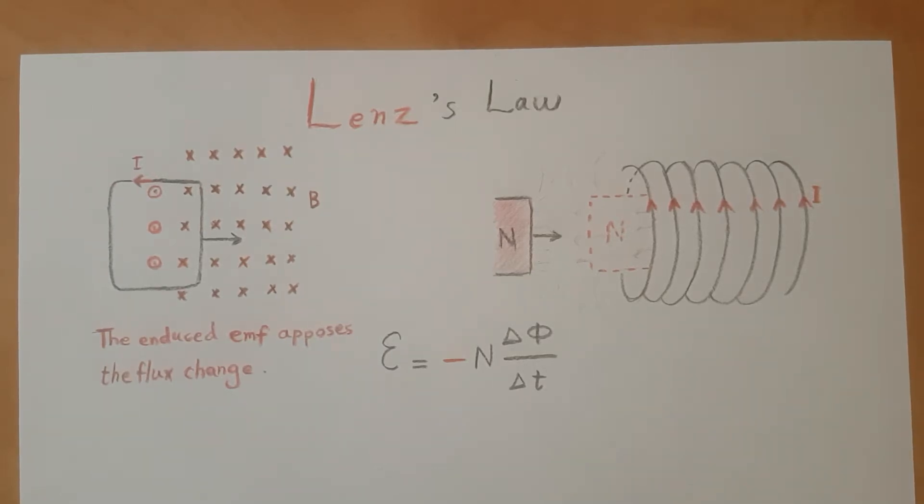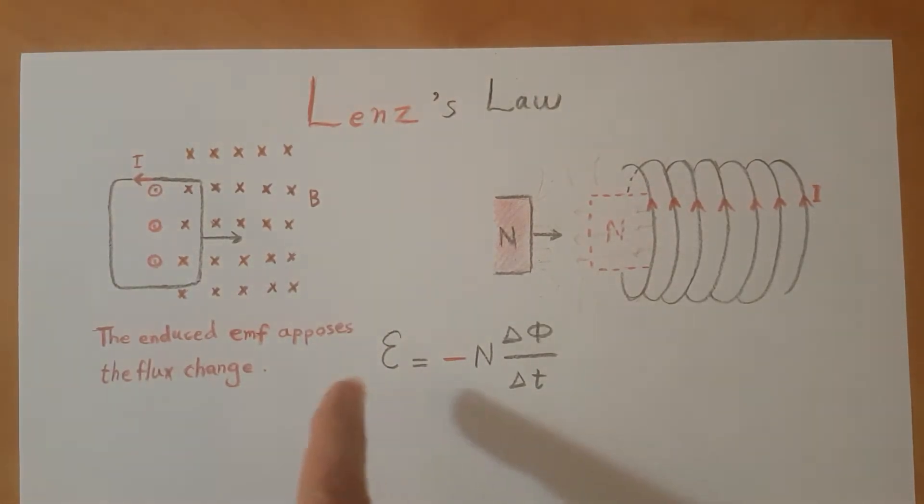Lenz observed that the induced EMF produced by changing the flux opposes the change in the flux, and this is why this negative is here. So you can see that the relationship of Faraday has changed to an equation with a negative in here.